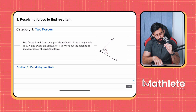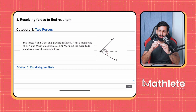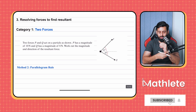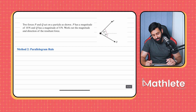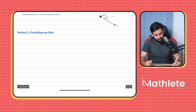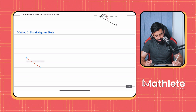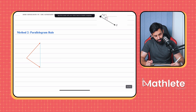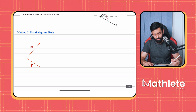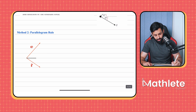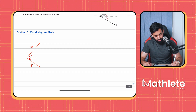Now Method 2: the parallelogram rule. Physics students may have heard of this already. We call it the parallelogram rule because we make a parallelogram from the two forces. We redraw the two forces — not to scale — with P equal to 10 newtons and Q equal to 8 newtons, at angles of 45 and 30 degrees respectively.